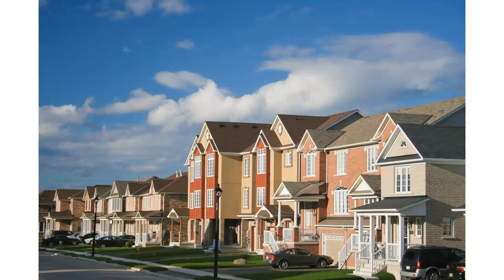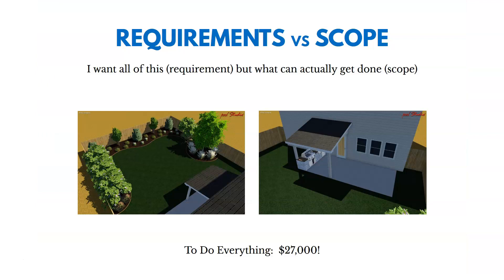To illustrate requirements and scope, let me share a personal experience. In a previous home, I contacted a landscaper for an estimate to landscape my front and backyard. He came up with drawings and sent over an estimate — about $27,000 to do everything. There was a long list of things I was interested in doing: trees, a patio out back, a grill and stone table. I wanted all of it — these were all requirements I had — but I had to scope the work smaller because of budget constraints.